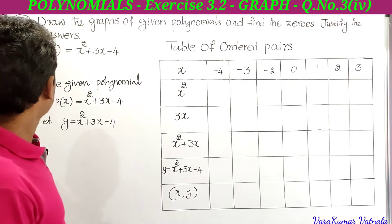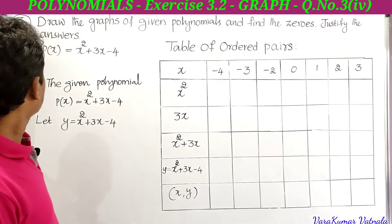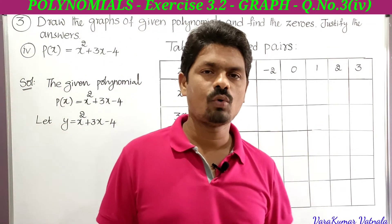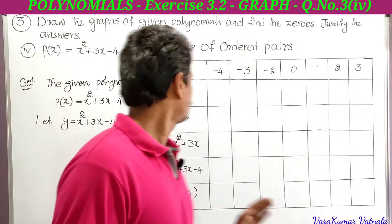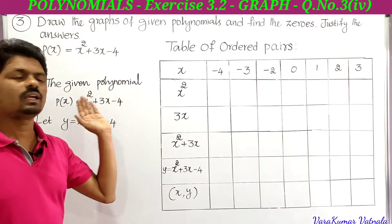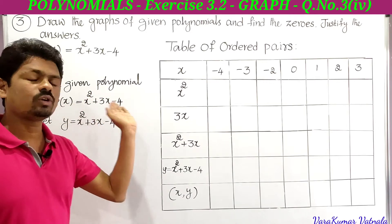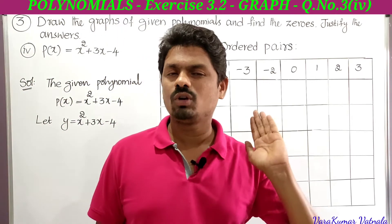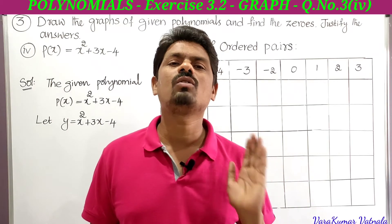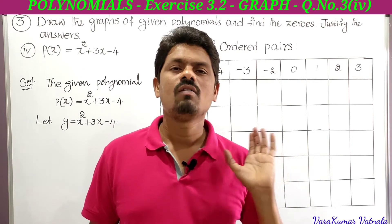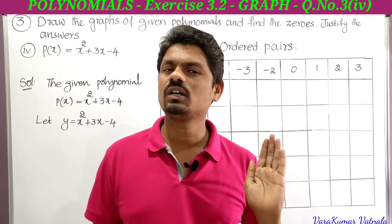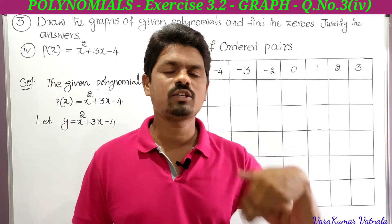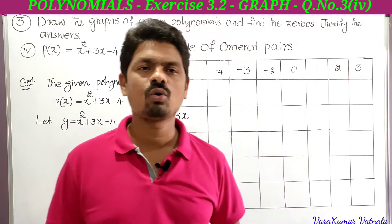Draw the graphs of the given polynomials and find the zeros — justify the answers. The fourth one: p(x) is equal to x² + 3x − 4. The given polynomial is p(x) = x² + 3x − 4. To draw the graph, we require some ordered pairs. For that, let the given quadratic polynomial be y = x² + 3x − 4.